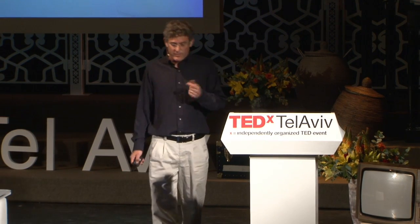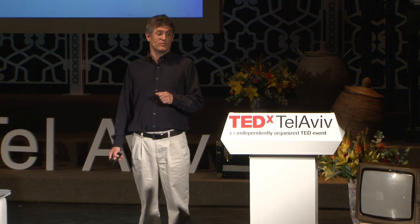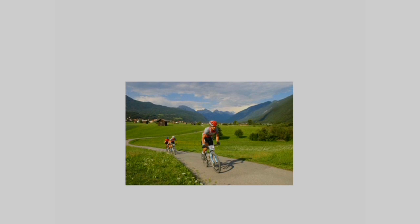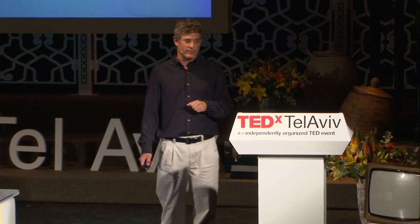So what is important in an image? Looking at perception, what is important is in fact the edges. If you look at edges in images, you can almost recognize what the image is all about. What we do is find seams that contain the least amount of edges in them, and we remove them. That's how we remove seams and reduce the size of images.